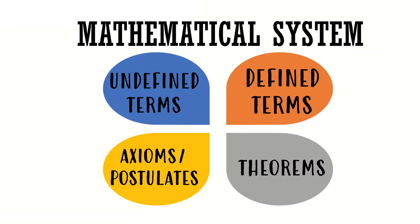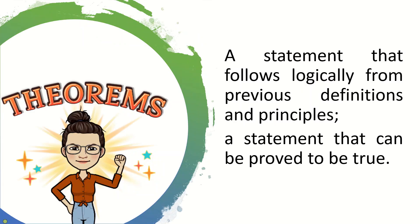Let us now move on to the fourth part of the mathematical system: the theorems. Theorems are statements that follow logically from previous definitions and principles, and can be proved to be true using postulates, definitions, other established theorems, and logic. The difference between postulates and theorems is that postulates are accepted as true even without proof, while theorems must be proved by reasoning.